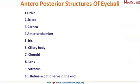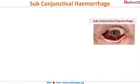All the structures of the eye will be affected, starting right from the orbit all the way to the retina — the orbit, sclera, cornea, anterior chamber, iris, ciliary body, choroid, lens, vitreous, retina, and the optic nerve. Everything is affected in mechanical trauma.